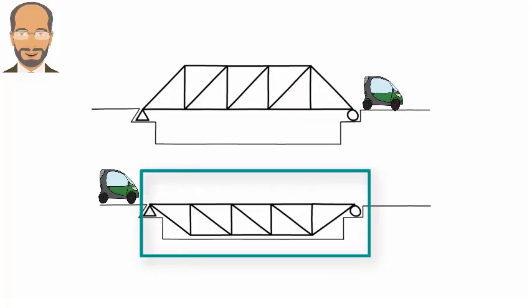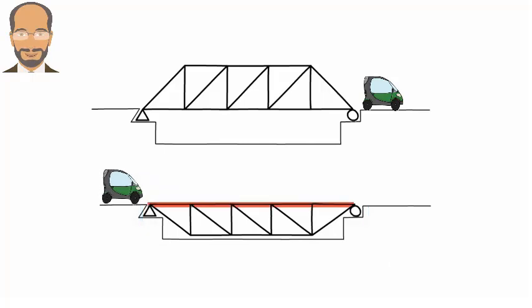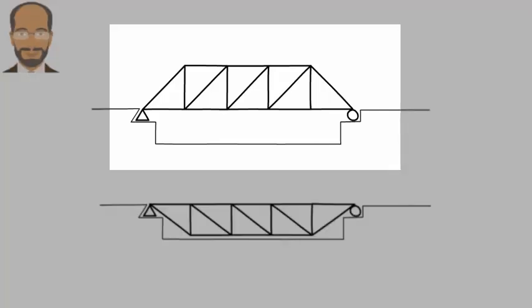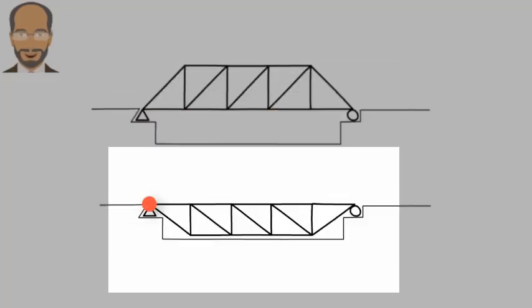But for this bridge, the load moves along the top chord. This allows us to identify the truss joints that the moving load can visit. In this case, the moving load visits these joints. But here, the load visits these joints.